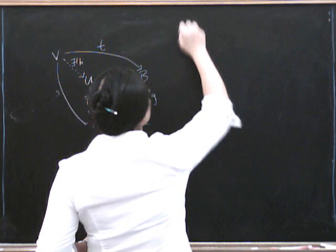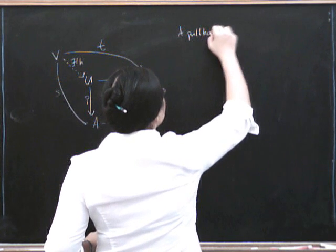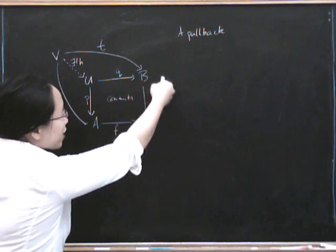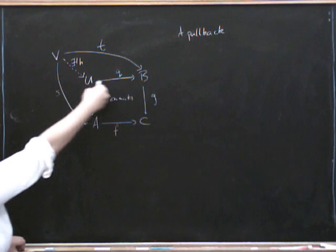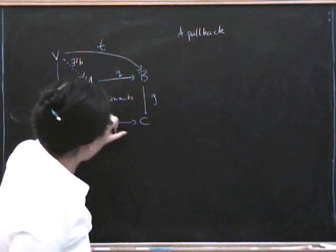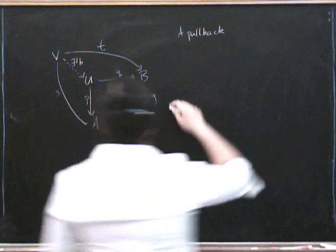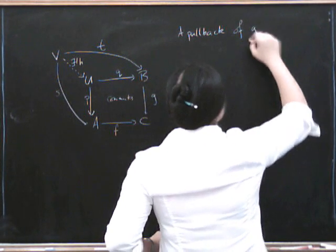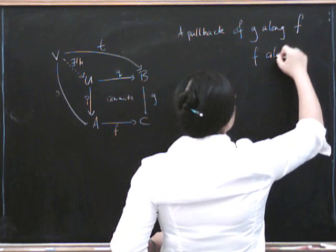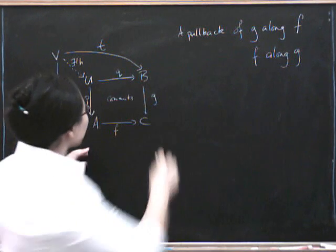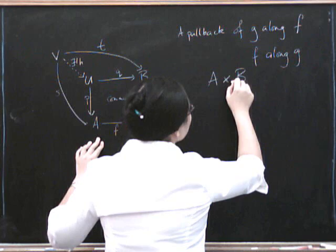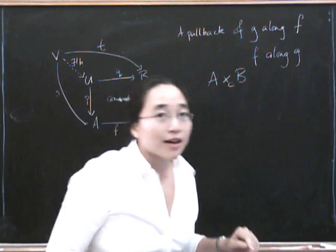We often call this a pullback of G along F, because you can imagine that G is a thing over here, and you're pulling it back along F until it gets all the way to here. Of course, there's some symmetry in this definition. So you can also think of this as F being pulled back along G. So this is sometimes called a pullback of G along F. It's also a pullback of F along G by symmetry. We sometimes also write it like this, A cross B over C. And I'll explain a bit more where that notation comes from in a second.